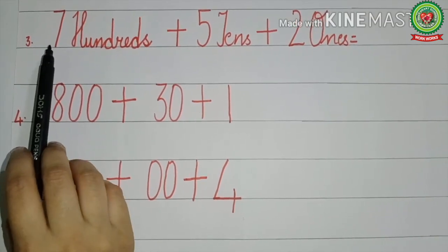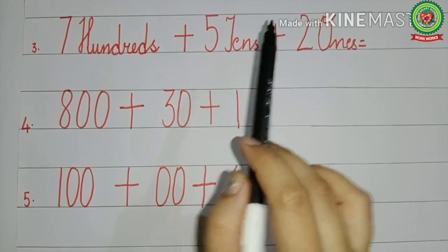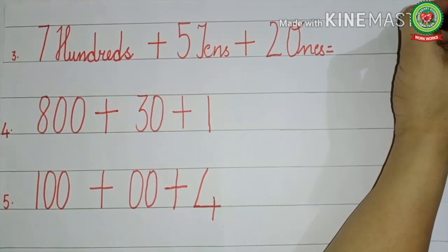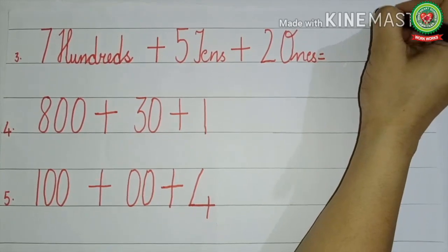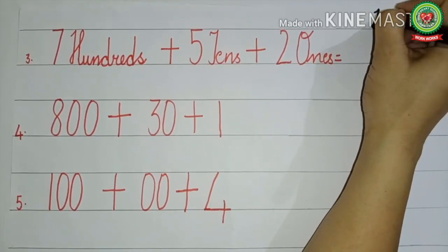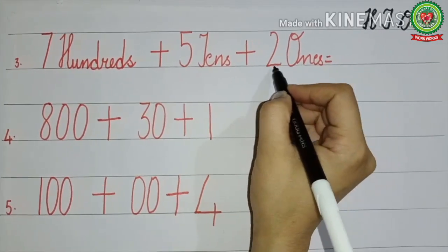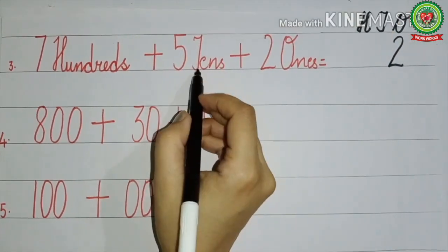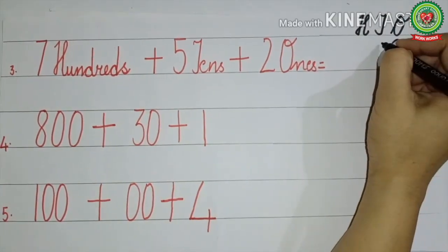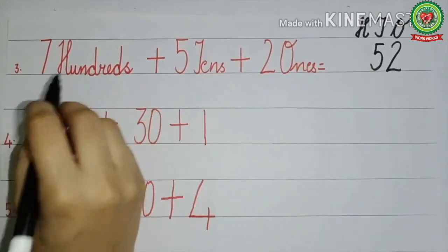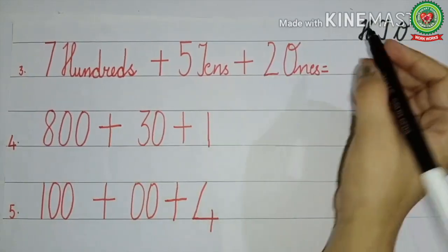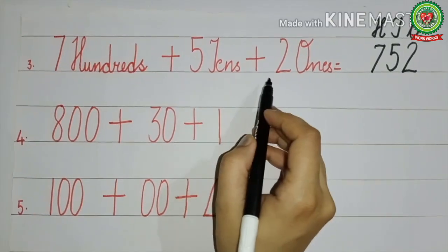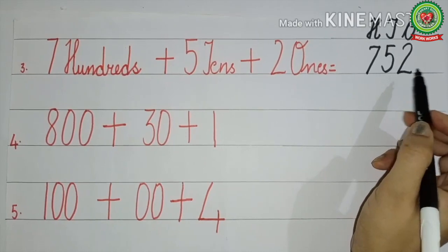Now read the statement carefully with me: 7 hundreds plus 5 tens plus 2 ones. This is a three-digit number, so we write the place value chart for ones, tens, and hundreds. What is written with ones? 2 — so we write 2 under ones. What is written with tens? 5 — so we write 5 under tens. What is written with hundreds? 7 — so we write 7 under hundreds. Therefore, 7 hundreds plus 5 tens plus 2 ones equals 752.